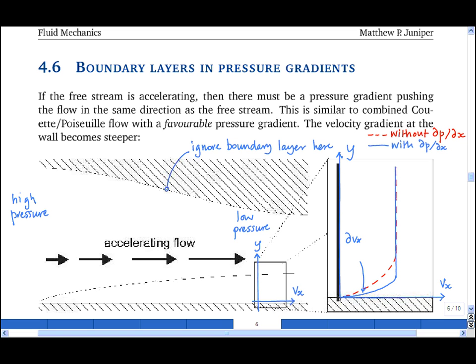And we find that at the wall partial dVx by dy is larger than it was when there was no pressure gradient.